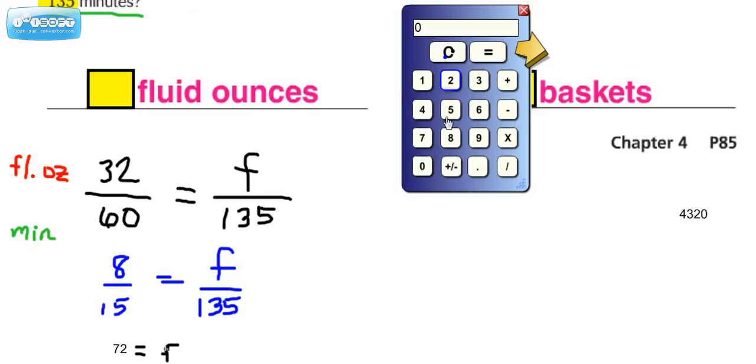Do 8 times 135, come up with a number, and then divide it by 15 to get the answer. In fact, since we have a little bit of time left on the clock here, let's go ahead and show that. So 8 times 135, in that case, we get this number as a cross product.